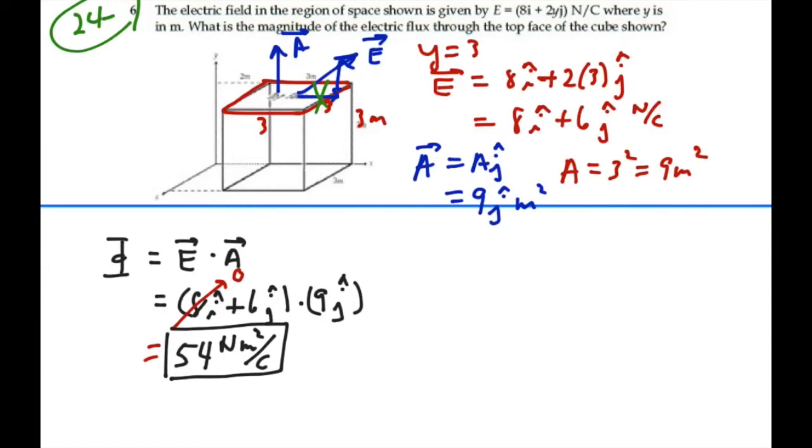And it's strictly just the y component of the E field that actually goes through the surface in an outward direction, so it's a positive flux. 54 newton meters squared per coulomb.